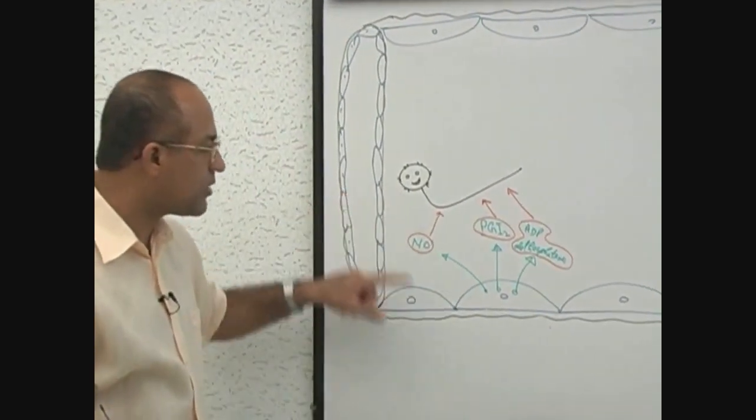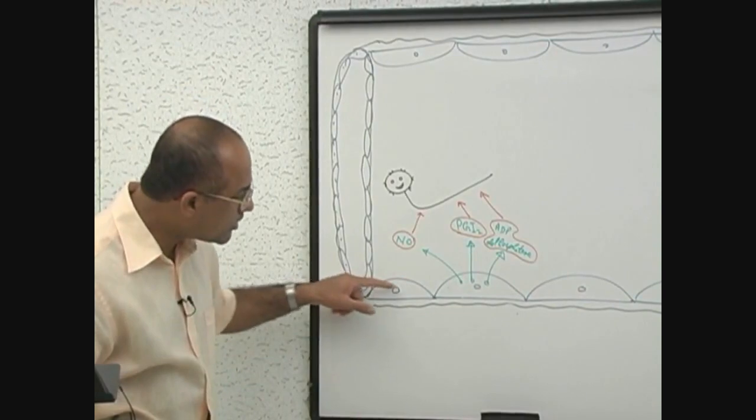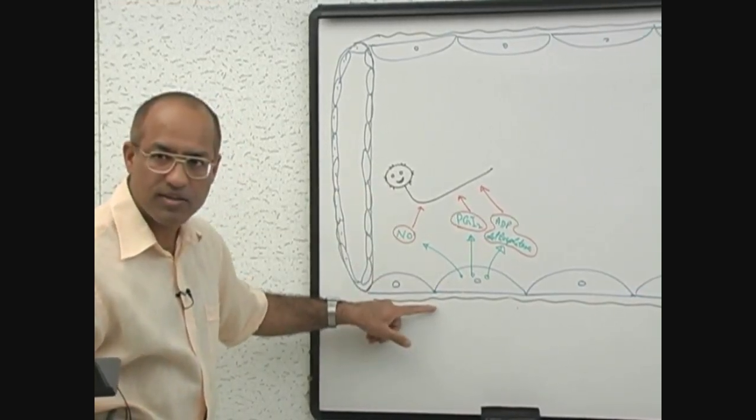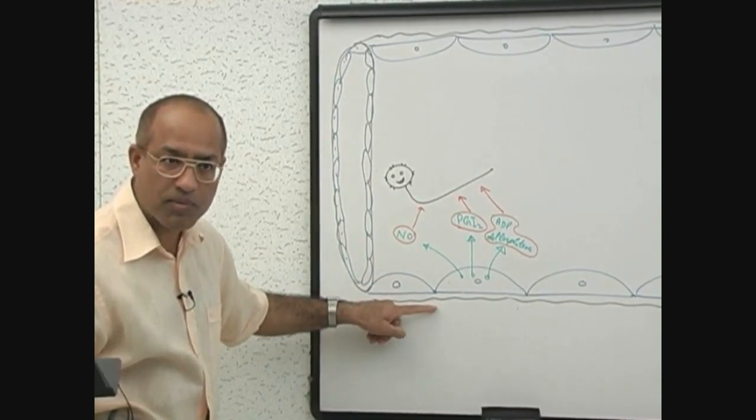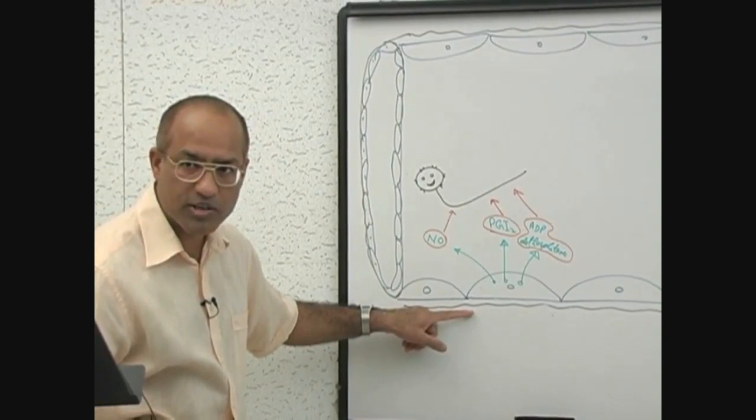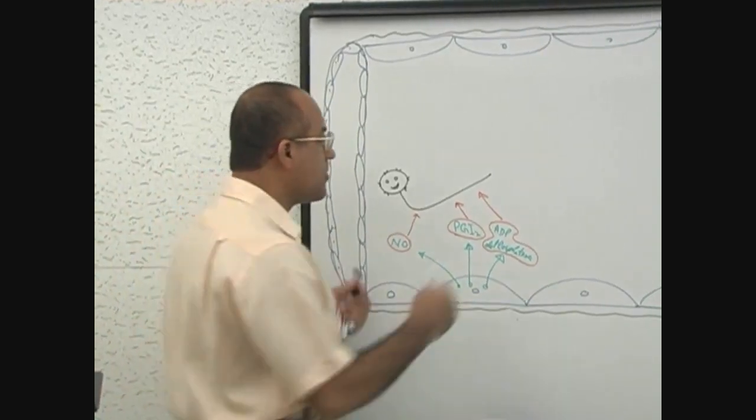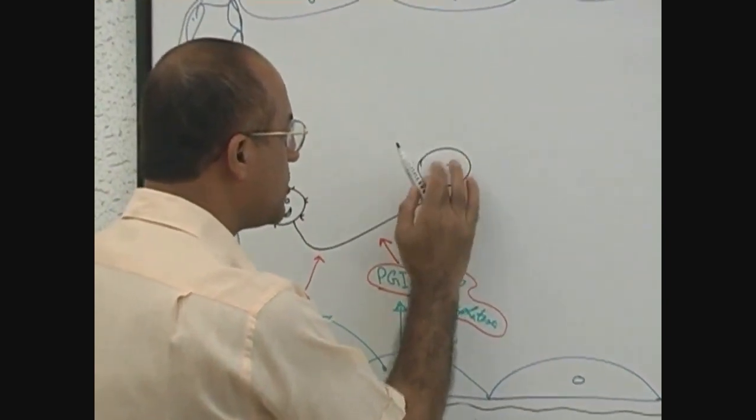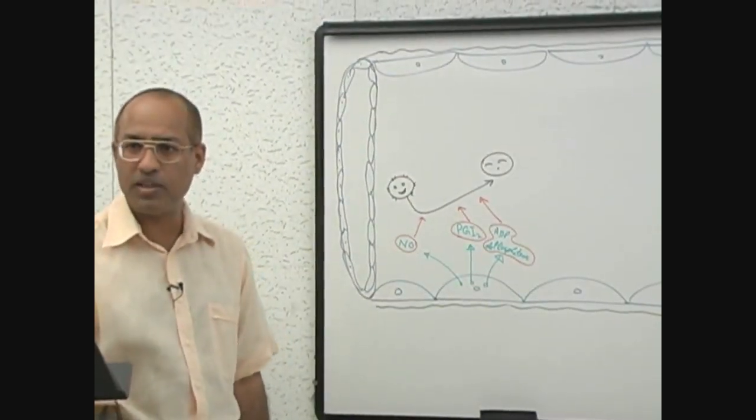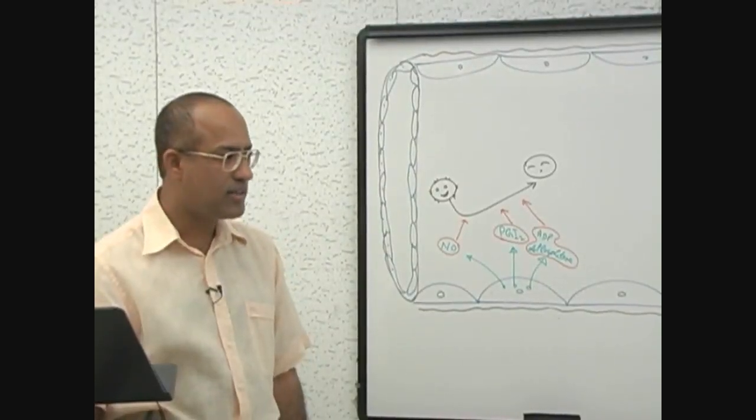Secondly, platelets love to bind with extracellular matrix which is under the endothelium, and healthy endothelium is a biological partition between the platelets and extracellular matrix under the endothelial cells. So they do not allow the platelets to come in touch with that extracellular matrix or basement membrane or collagen fibers. This is one way, so naturally platelets are unable to bind there. Now they are no more interested, they are sleepy. They are not active. They are kept inactivated by the products of endothelium, and platelets do not bind with the healthy endothelium.